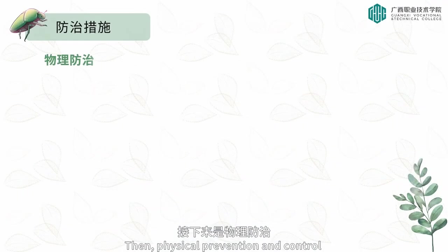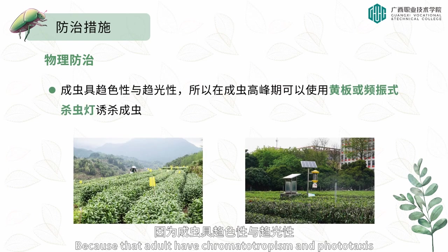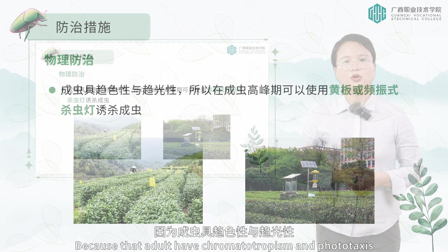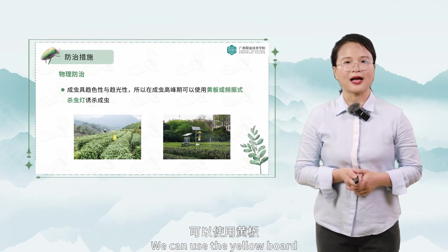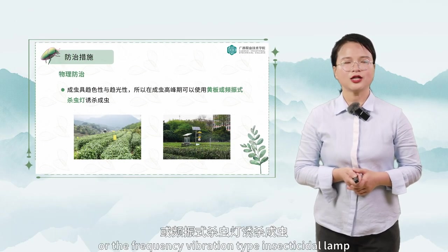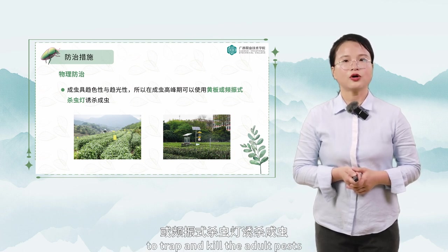Then, physical prevention and control. Because adults have chromatotropism and phototaxis, during the adult peak period we can use yellow boards or frequency vibration-type insecticidal lamps to trap and kill adult pests.